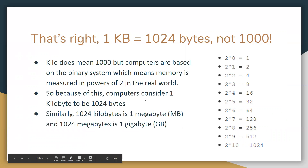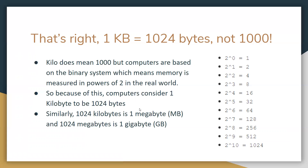Computers consider one kilobyte to be 1,024 bytes. Similarly, 1,024 kilobytes is 1 megabyte, and 1,024 megabytes is 1 gigabyte. Notice how bytes are presented with a capital B, while you usually see a lowercase b when referring to bits.